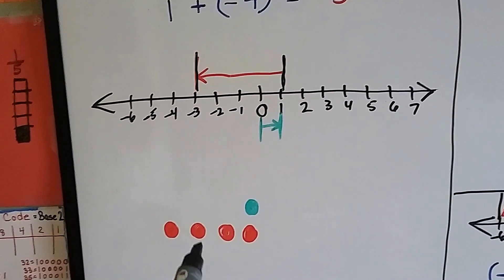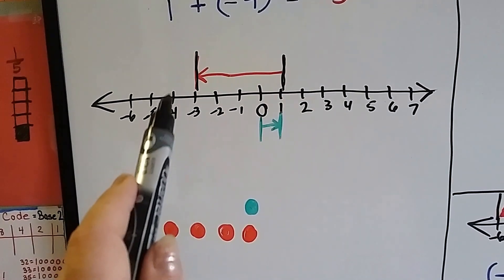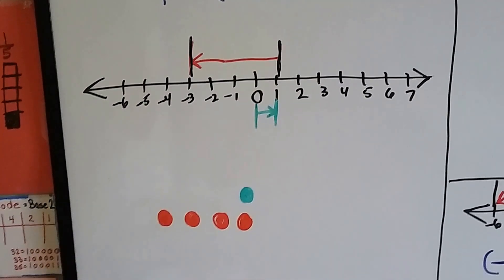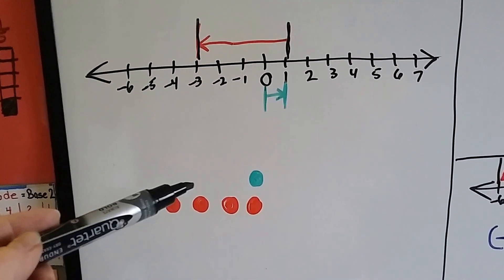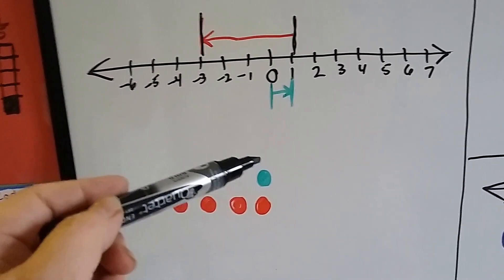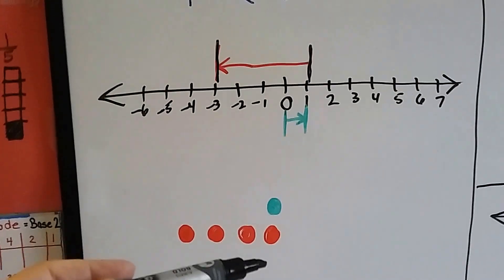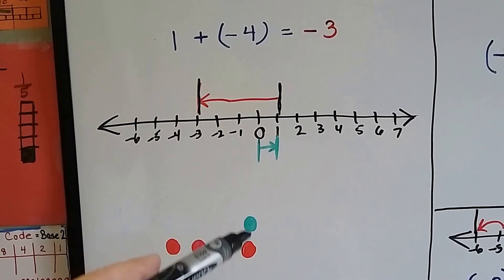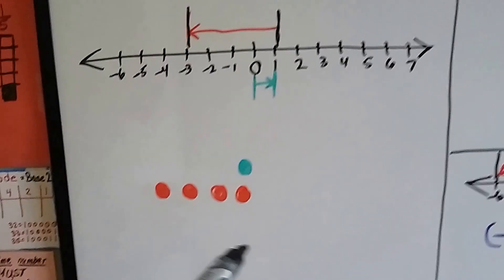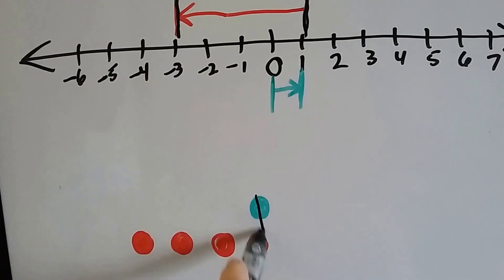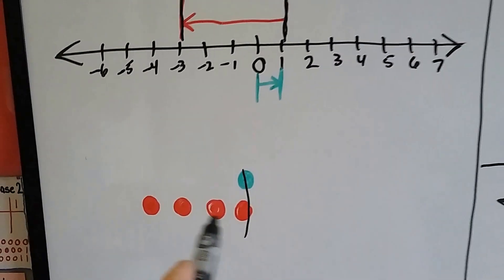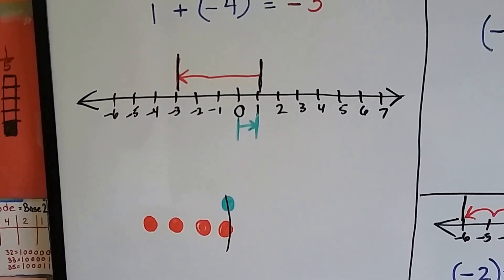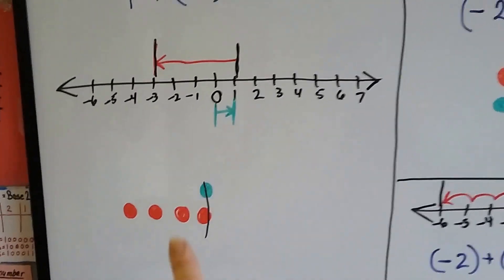Now we're going to use chips. In the last video we used number lines and building hills and digging holes. Now we're doing chips — the green ones are positive and the red ones are negative. For this equation, we've got 1 positive and we're adding 4 negative. This positive and this negative 1 cancel each other out and we're left with 3 negative chips.